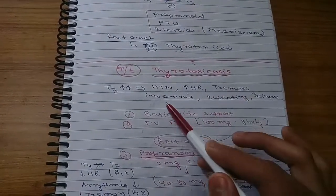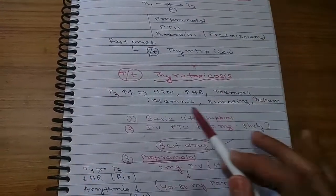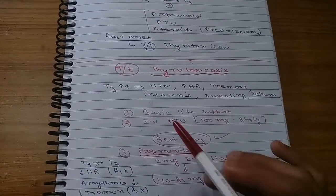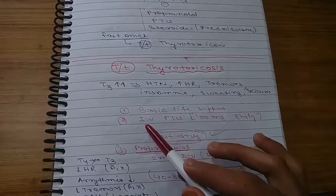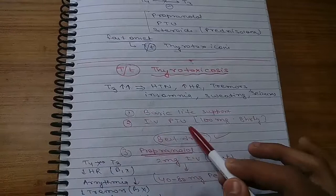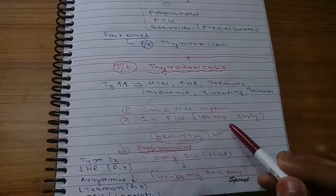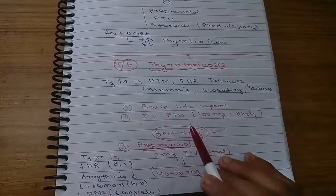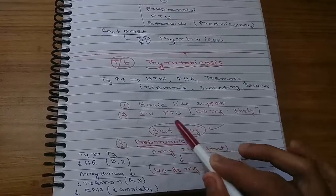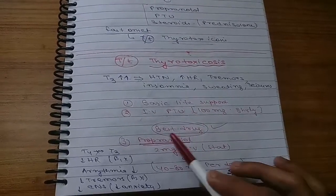How will we treat thyrotoxicosis? Whenever T3 increases, there will be hypertension, increased heart rate, tremors, insomnia, sweating, seizures. These are all associated with thyrotoxicosis. First we will give basic life support, then we will give intravenous PTU, that is propylthiouracil.